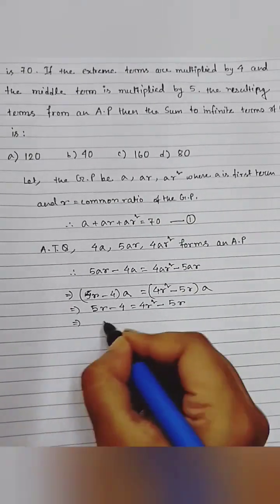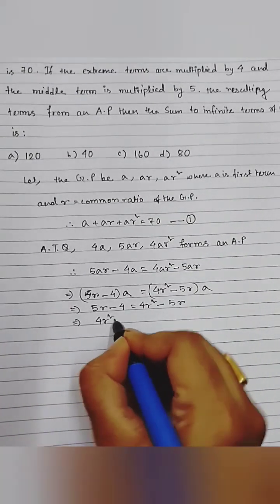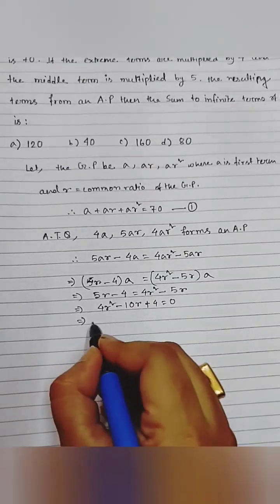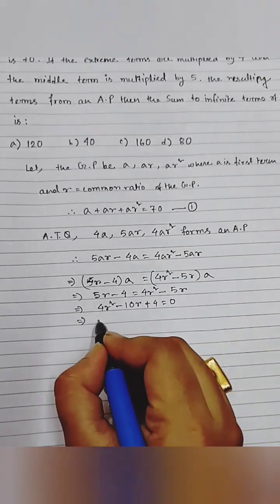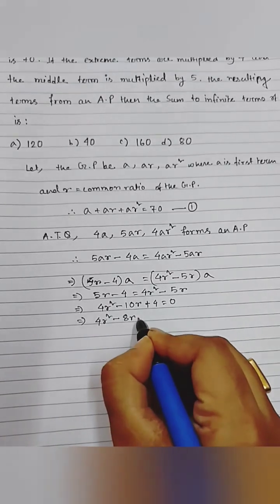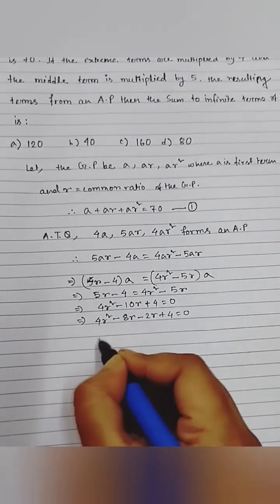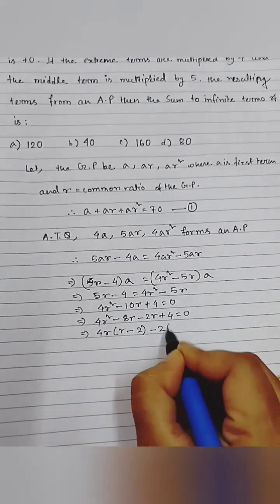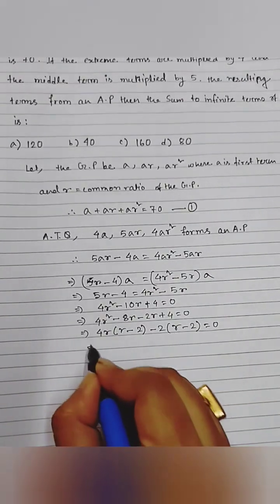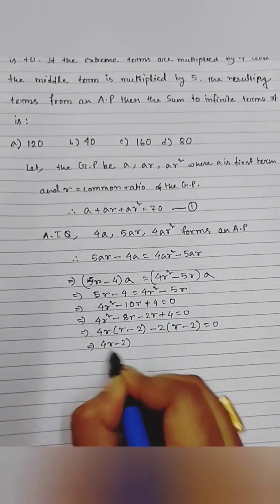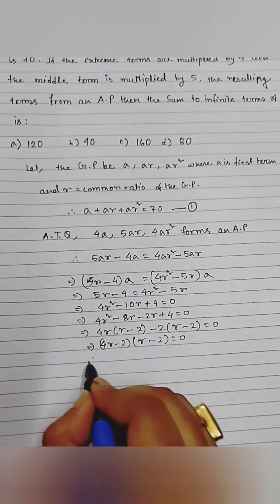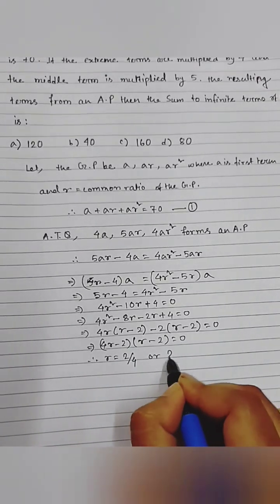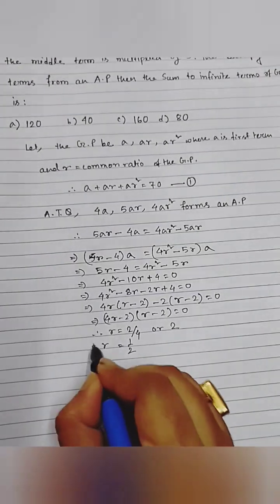Rearranging, we get four r squared minus ten r plus four equals zero. Splitting the middle term: four r squared minus eight r minus two r plus four equals zero. Factorizing: 4r(r minus 2) minus 2(r minus 2) equals zero, giving (4r minus 2)(r minus 2) equals zero.